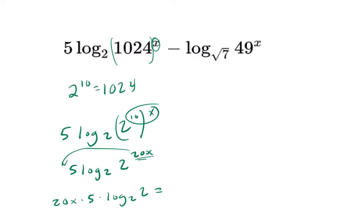Well, when I wrote 20x, I don't know why I wrote that. Sorry. That's 10x, right? 10 times x is 10x. And 10x times 5 is 50x, right? Times the log base 2 of 2. Log base 2 of 2 is just 1 because 2 to the first power is itself and that's 50x.